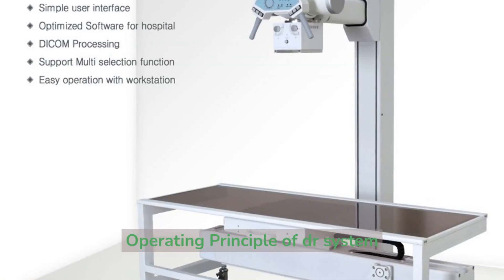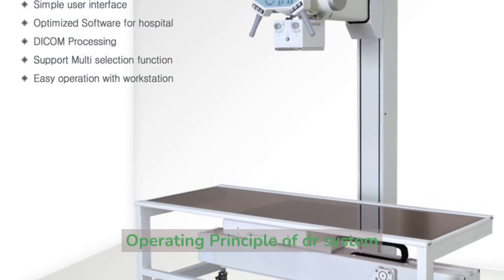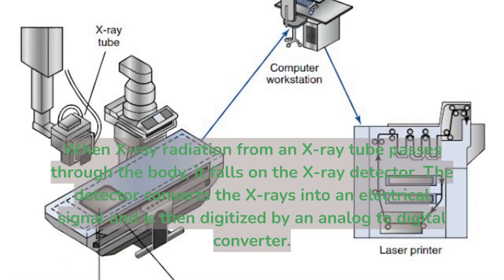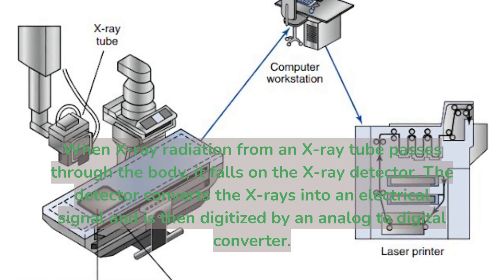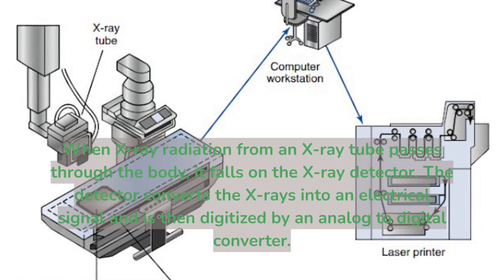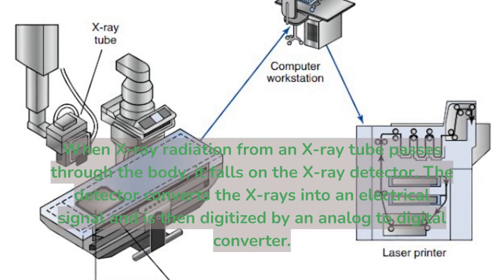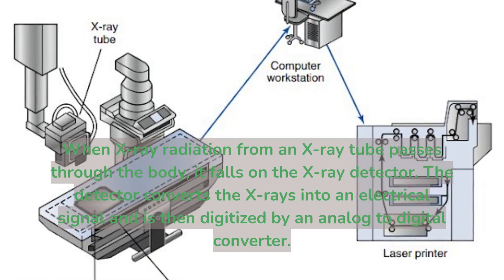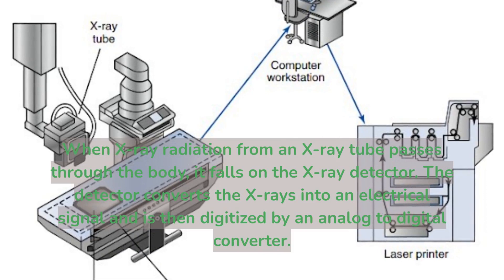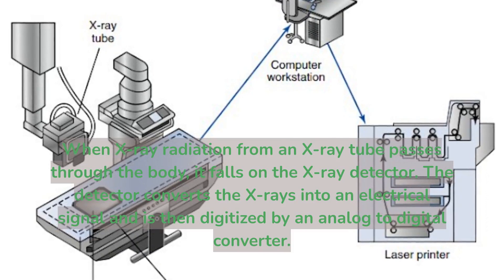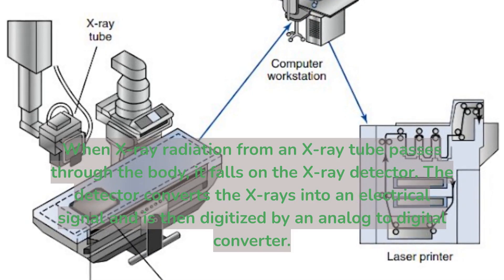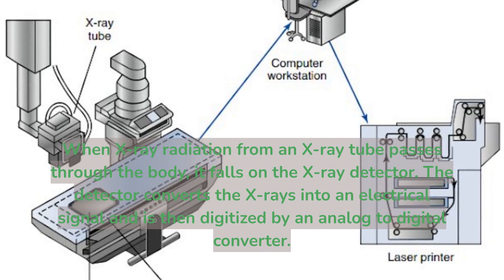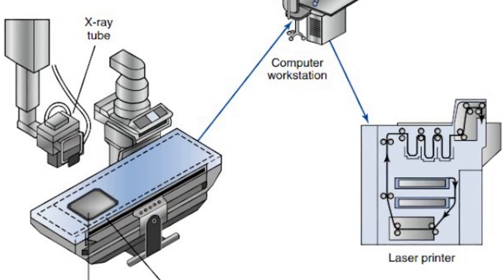Operating principle of the DR system: when x-ray radiation from an x-ray tube passes through the body, it falls on the x-ray detector. The detector converts the x-rays into an electrical signal, which is then digitized by an analog-to-digital converter.